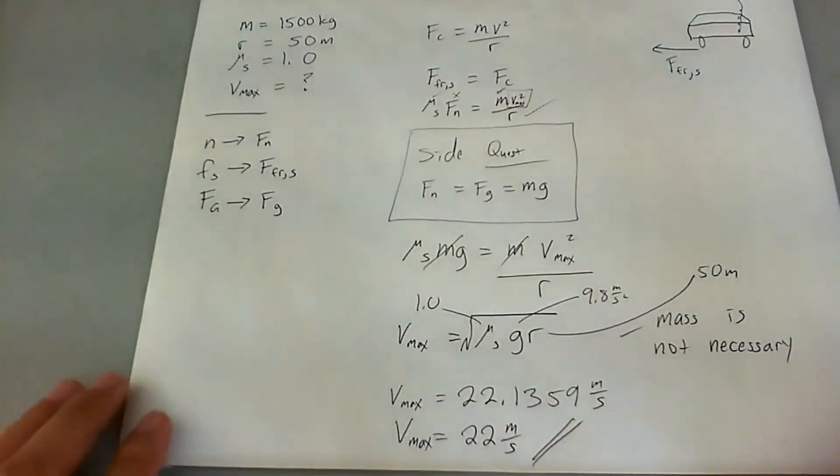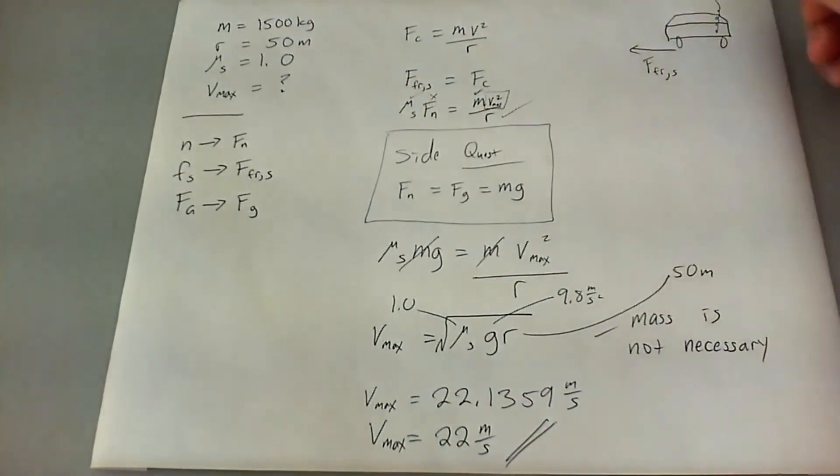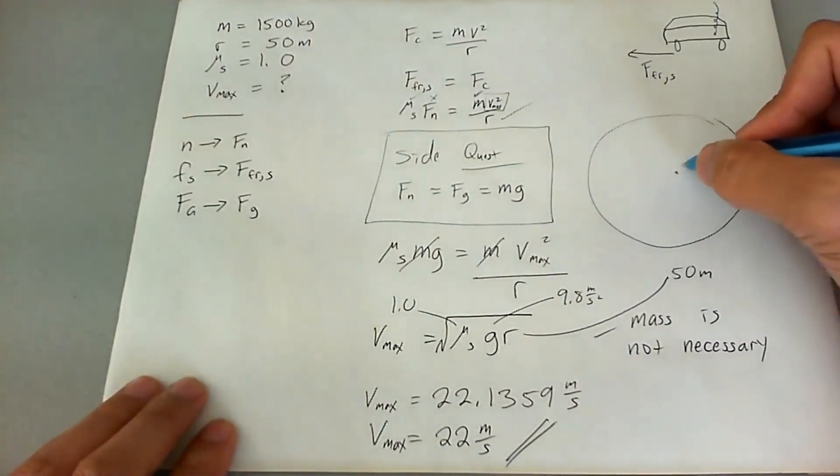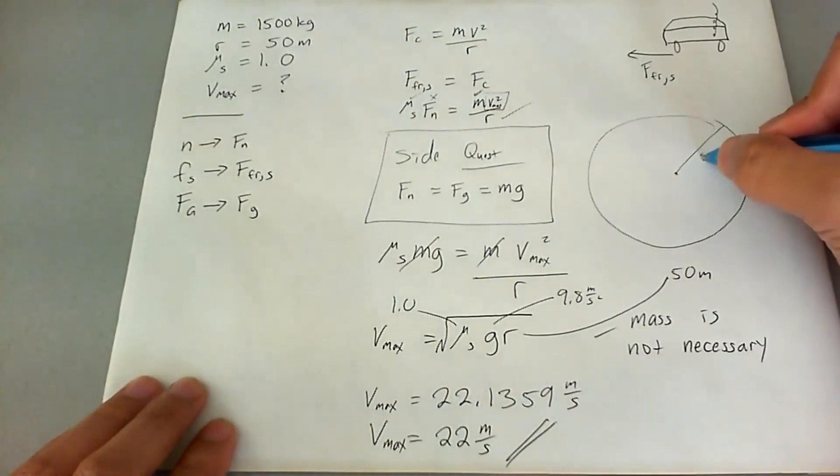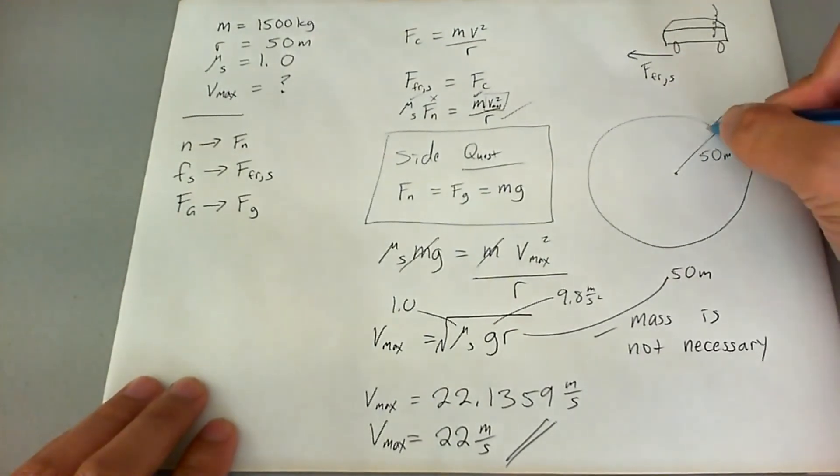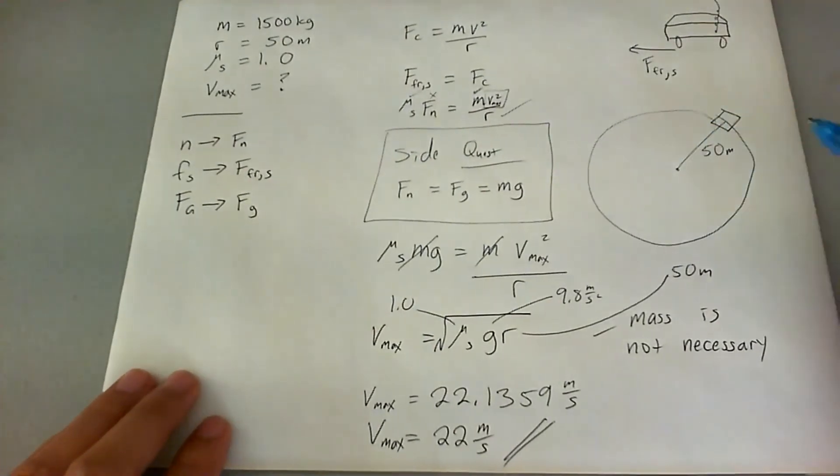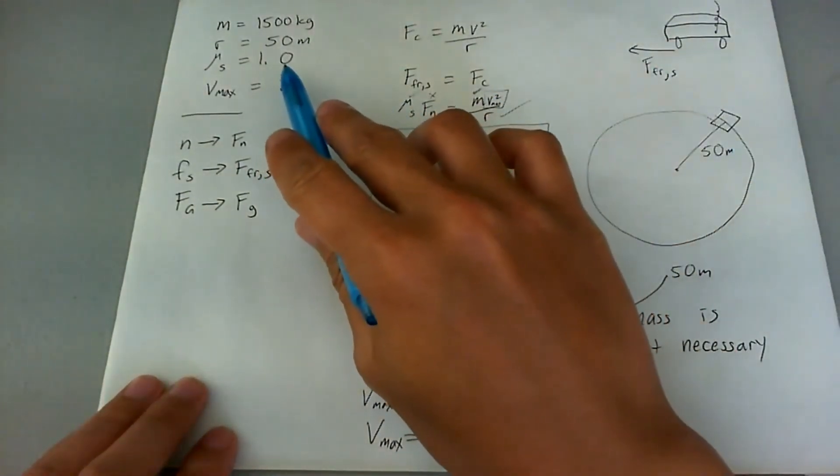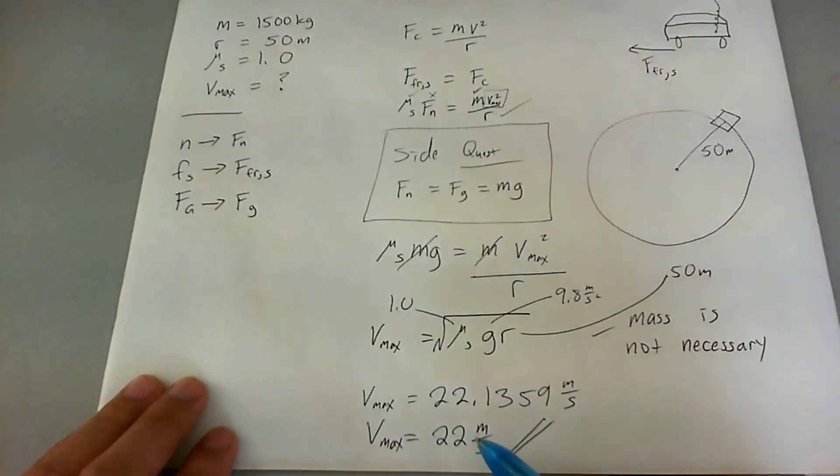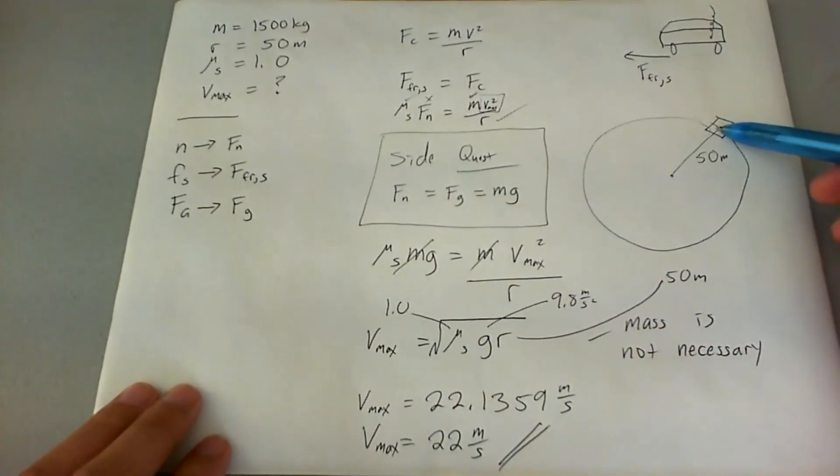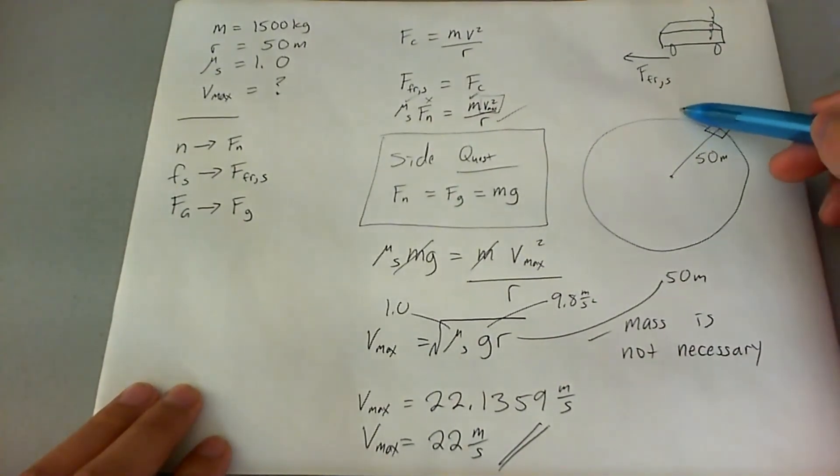And that's the final answer. So that means that for a car going in a really big circle like this, so here's the center of the circle, the radius is 50 meters, and you got a car here that's traveling in that circle with this coefficient of static friction, the car can only go up to just a bit over 22 meters a second before it starts to skid and start going out of that circle.